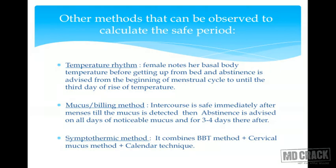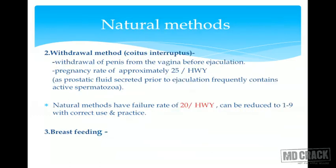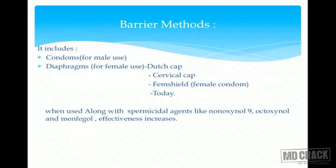Intercourse is safe immediately after menses until mucus is detected, then abstinence is advised during all days of noticeable mucus plus four additional days. The symptothermic method combines basal body temperature, cervical mucus assessment, and the calendar technique. Withdrawal — coitus interruptus — involves withdrawal of the penis before ejaculation; pregnancy rate is approximately 25 per 100 woman-years due to spermatozoa in prostatic fluid secreted prior to ejaculation, though failure can be reduced to about 9 with correct practice.